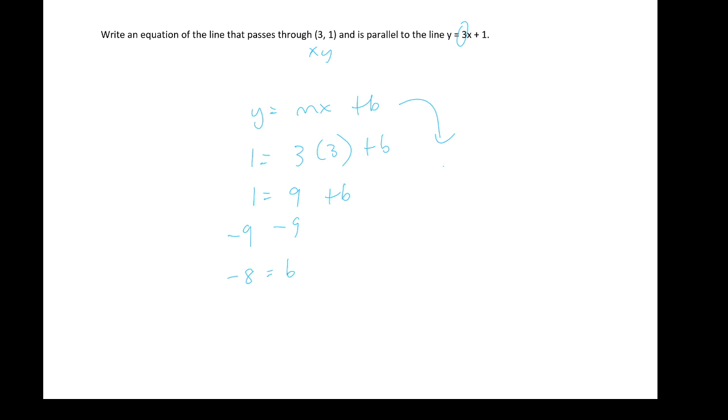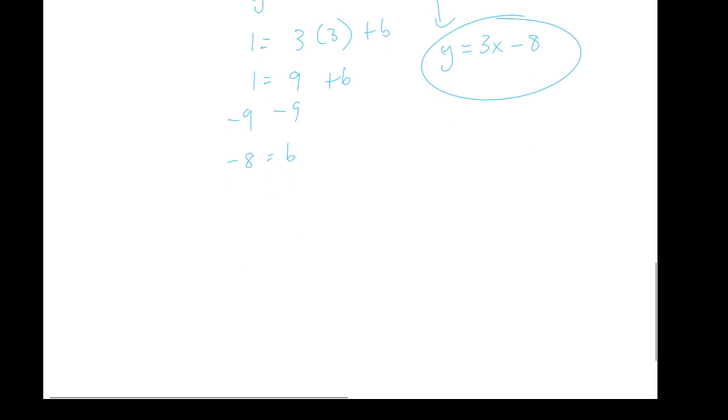So again, we're going to take our y equals mx plus b. And we're going to substitute in our new slope and our new y-intercept. That's what we're going to do for our equation, which is going to be in slope-intercept form. Our stolen slope is m, 3, x. And then, our new y-intercept is negative 8. There we go.